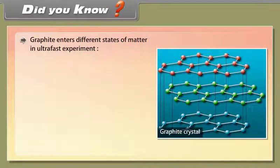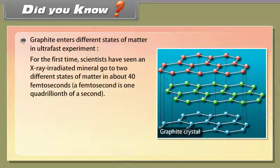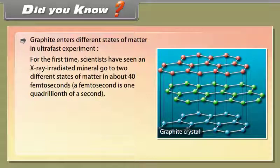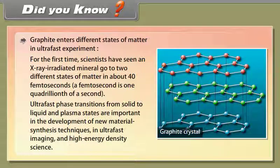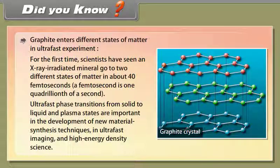Did you know? Graphite enters different states of matter in an ultrafast experiment. For the first time, scientists have seen an X-ray irradiated mineral go to two different states of matter in about 40 femtoseconds. A femtosecond is one quadrillionth of a second. Ultrafast phase transitions from solid to liquid and plasma states are important in the development of new material synthesis techniques, ultrafast imaging, and high energy density science.